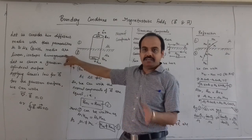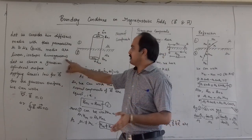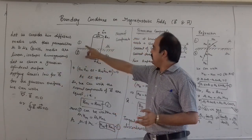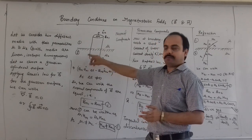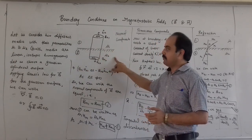Both media are linear, isotropic, and homogeneous. So these are two media 1 and 2 with permeabilities mu1 and mu2.